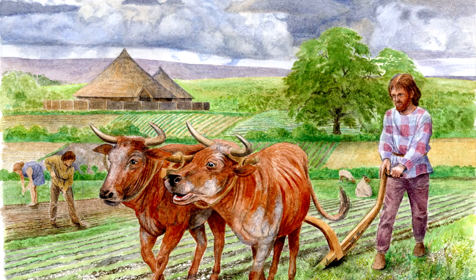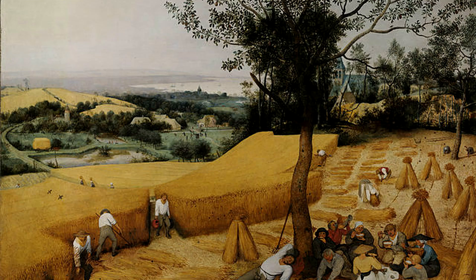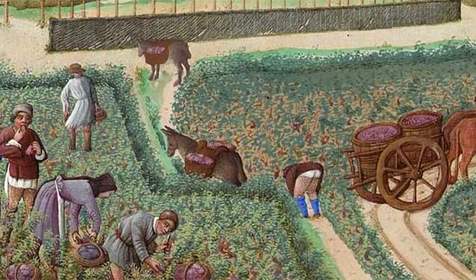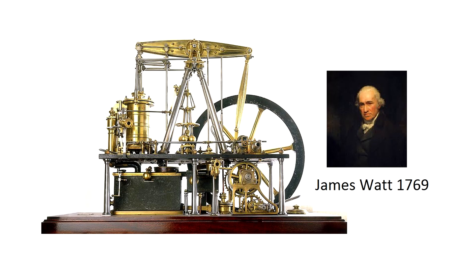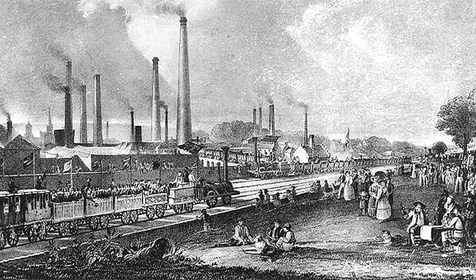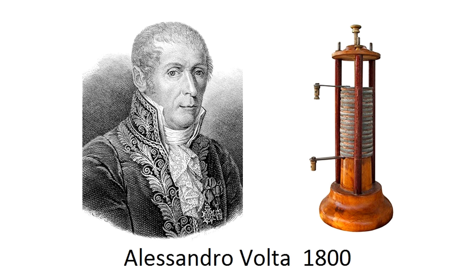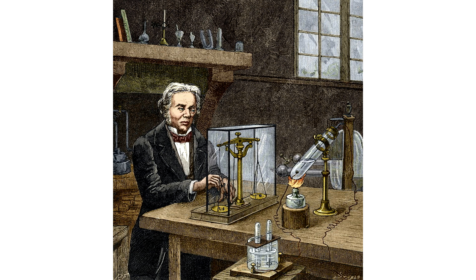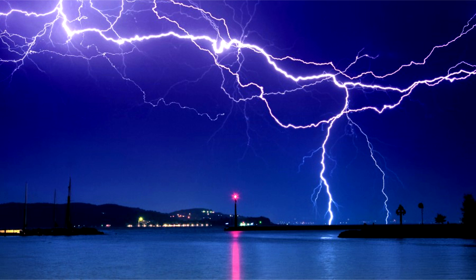For thousands of years our ancestors lived and used the gift of nature mainly without contaminating it. But 300 years ago everything changed dramatically. With the invention of the steam engine the industrial revolution began. Later Alessandro Volta invented the first chemical source of current and humanity started to study the wonders of electricity, which were previously considered to be a divine phenomenon.